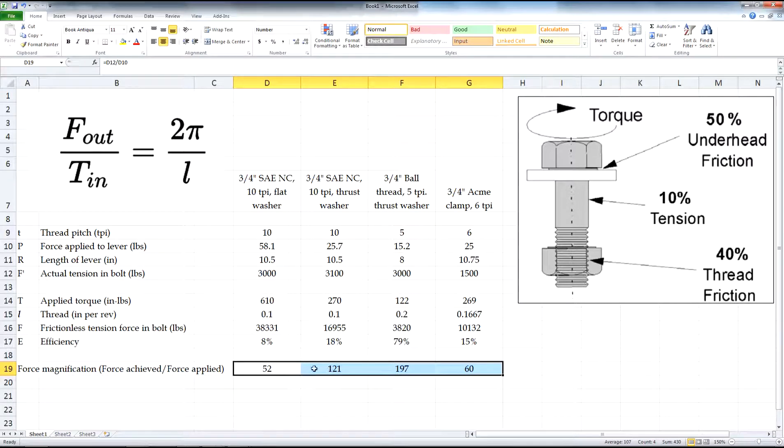Our standard three-quarter inch thread was a 52 factor. So, if you put 10 pounds on the wrench, you would have got, presumably, 520 pounds of tension in the bolt. National course, we got 121 times and the ball thread was 197 times. But, what's interesting here, in part, is the comparison between the Acme thread and the standard flat washer thread. Pretty close.